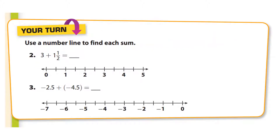Use a number line to find each sum — pause the video and see if you can figure these out first. For three plus one and a half: three plus one is four, plus a half is four and a half. That's exactly the answer.